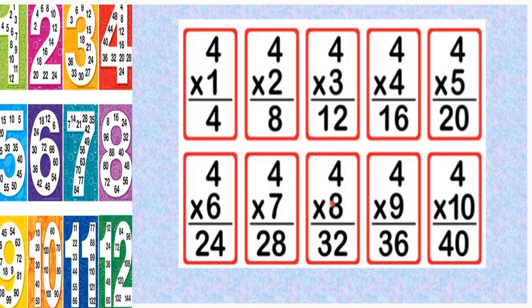One more example: for 4, I am also multiplying by 1, 2, 3, 4, 5 and so on. There is no end to the multiples. So I am getting the multiples of 4 as 4, 8, 12, 16, 20, 24 and so on.